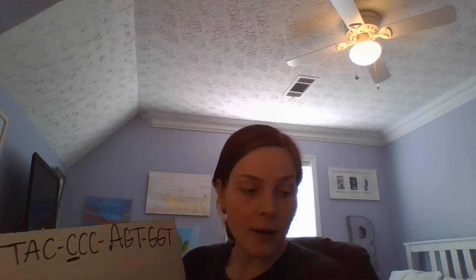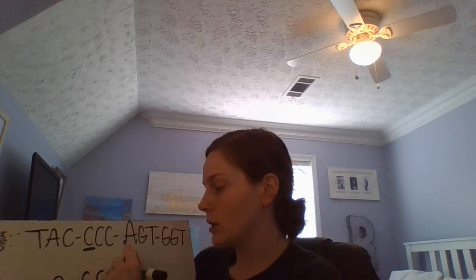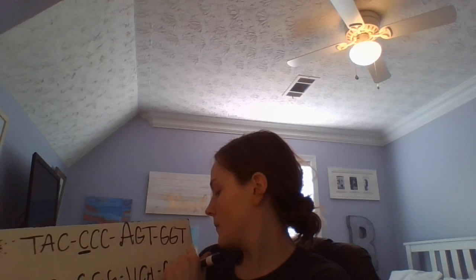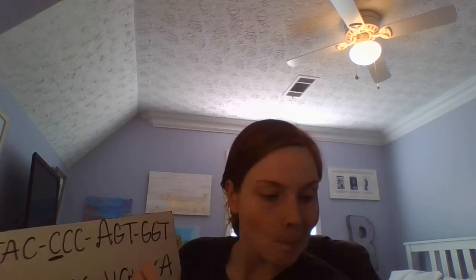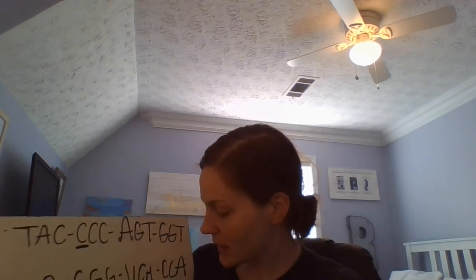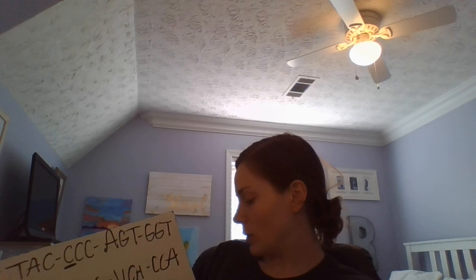So let's figure out if it changes anything. Our mRNA sequence is going to be A, U, G, G, G, G, U, C, A, C, C, A. AUG gives you methionine, GGG gives you glycine, UCA is serine, and CCA is proline.